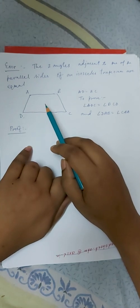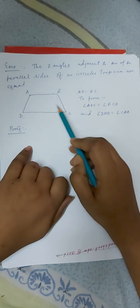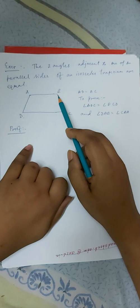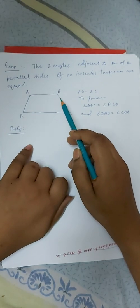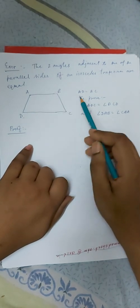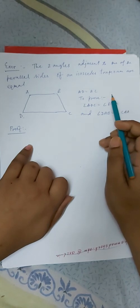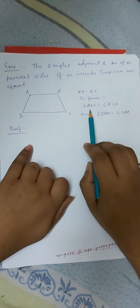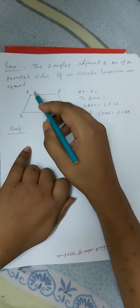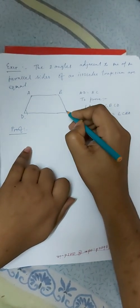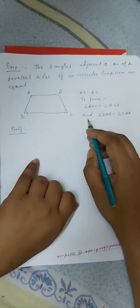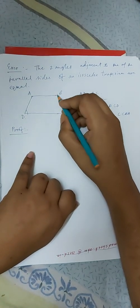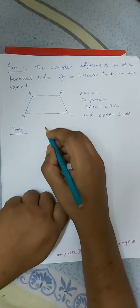BC equal to AD. Isosceles means two non-parallel sides will be equal, so BC equal to AD. To prove that angle ADC and angle BCD will be equal. How do you prove that? It's very important.